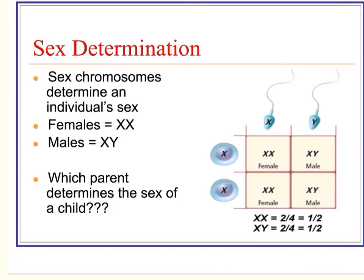Another complex pattern of inheritance is sex-linked or X-linked traits. Before we get into that, we want to talk about sex determination — which parent basically determines the sex of a child. We're not talking about gender or identity or anything like that, just the biological sex of a child.